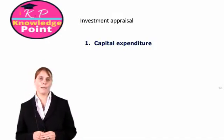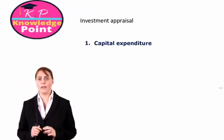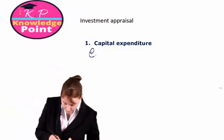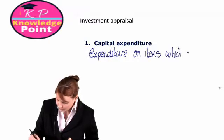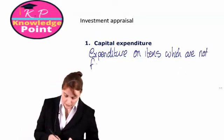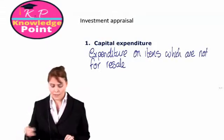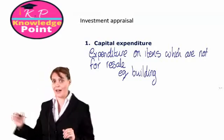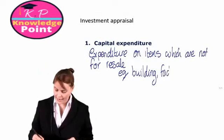Capital expenditure is expenditure on items which are not for resale — things which we buy in order to run our business, but we have no intention of selling them on to our customers. Examples include our buildings: we buy them to use them, to put offices in them or perhaps a factory to produce our product. We don't buy buildings with a view to resale. Factory machinery is another example — we buy that to use it to run our business, not to sell on to customers.